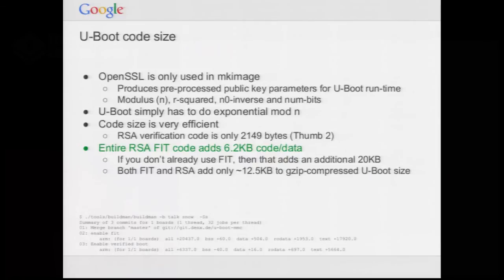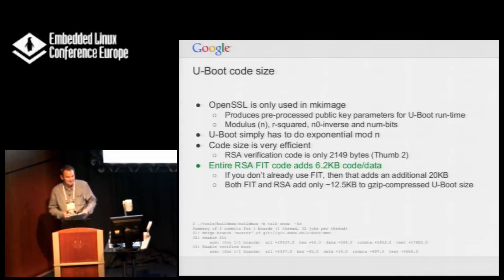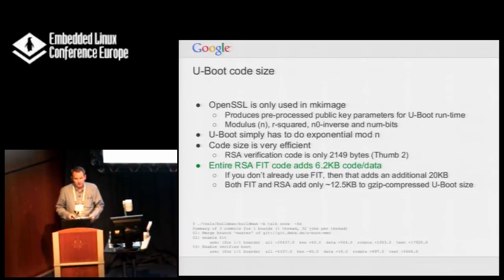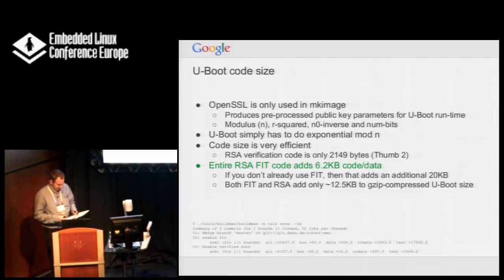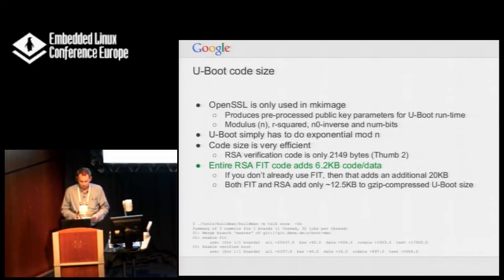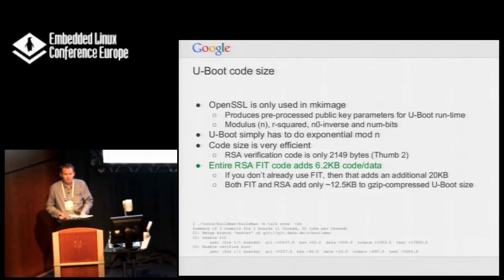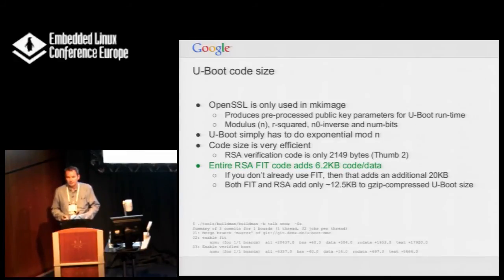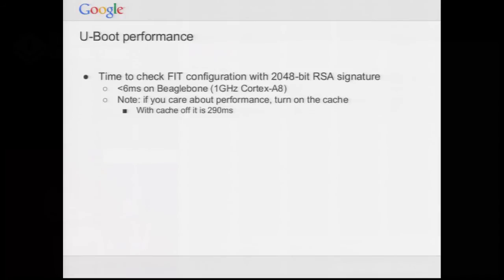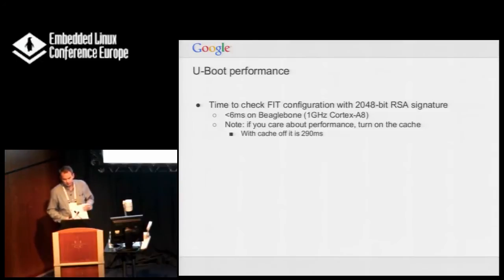How many of you are worried about the code size of this arrangement? It's actually quite efficient, partly because of the way it's been implemented with all the pre-processing done by mkimage. It's about 2K bytes for RSA, and the entire verification code including the RSA-FIT stuff is about 6K on Thumb-2. If you're not using FIT there's an additional 20K, much of which is strings and error messages. The overhead of verified boot in U-Boot is very, very small. In terms of performance, it can verify a configuration on a BeagleBone in about 6 milliseconds.